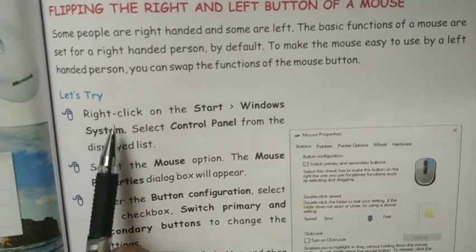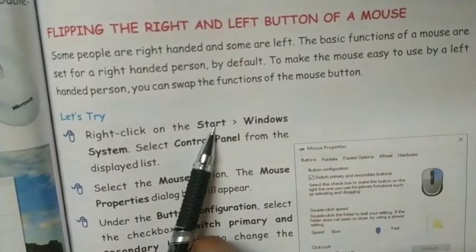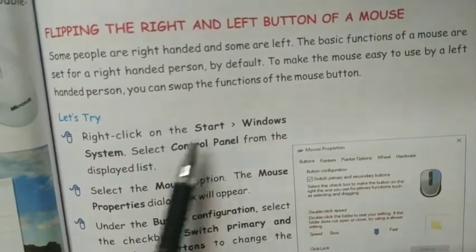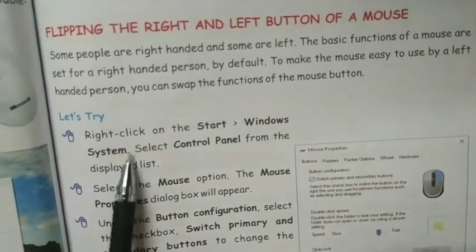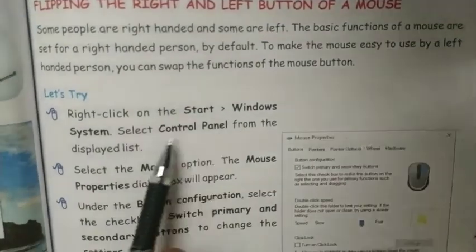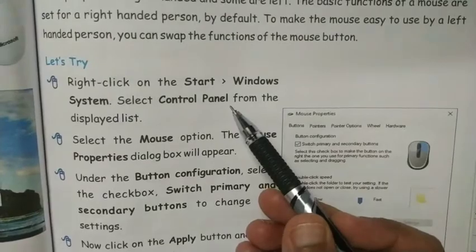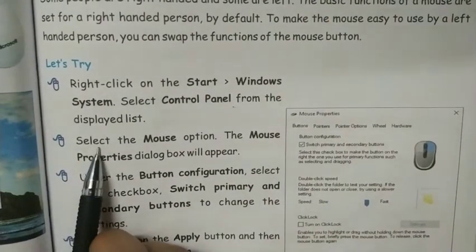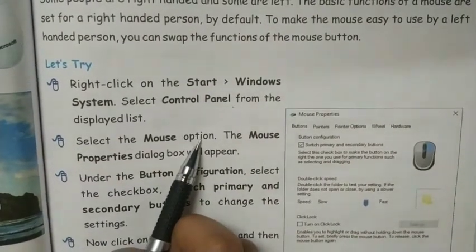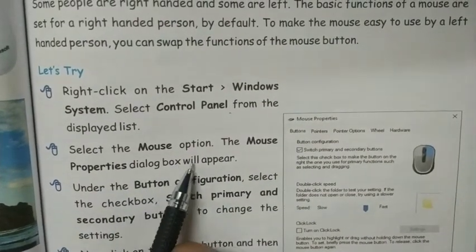Let's discuss the following steps. Right click on the start button. After that click on Windows System. Select Control Panel from the displayed list. After you have selected Control Panel, select the mouse option. The mouse properties dialog box will appear.